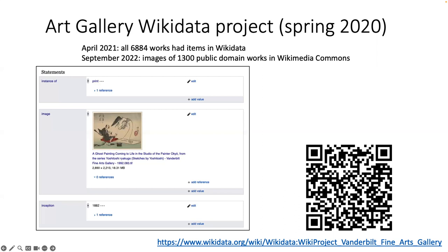We worked together as a group. I had a lot of metadata that was basically exported out of Art Store, which is their web interface. They don't really have an exposed database, so I basically had a spreadsheet with a bunch of information about all of their works and figured out a way to get it uploaded into Wikidata. There are about roughly 7,000 works in the art gallery, and by April 2021 we had all of those in Wikidata.